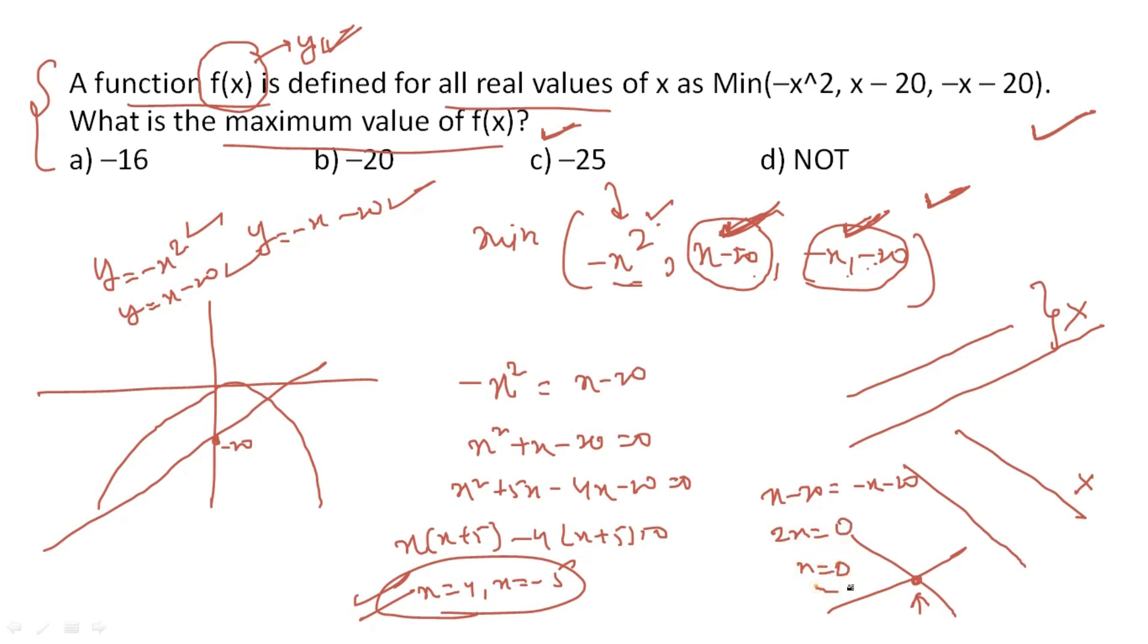Out of these values, I need the minimum of the three functions. When I put x equals minus 5, I get this as minus 25 and again minus 25. When x is minus 5, here I get minus 15. The minimum function among these is minus 25.